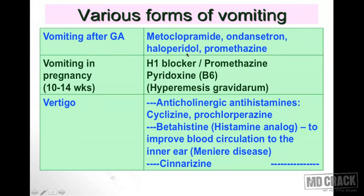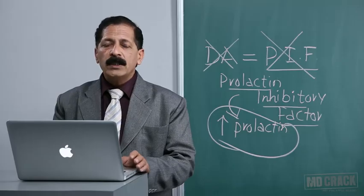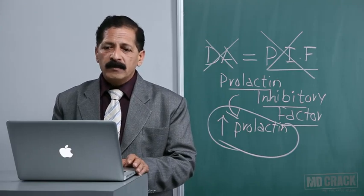Vomiting after general anesthesia: use metoclopramide, ondansetron, and sometimes the antipsychotic haloperidol and promethazine. Vomiting in pregnancy, especially at 10–14 weeks: H1 antihistamines or promethazine can be used; a specific agent for hyperemesis gravidarum is pyridoxine (vitamin B6). For vertigo: anticholinergic antihistamines like cyclizine and prochlorperazine are used, or betahistine — a histamine analog that improves blood circulation to the inner ear. Cinnarizine and flunarizine (weak calcium channel blocking antihistamines) are also useful for vertigo. This completes the discussion of prokinetic and anti-emetic agents.